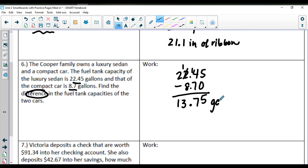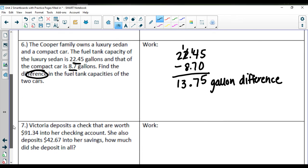So we have 13.75 gallon difference, and as long as you have gallons or gallon there, that would be good enough. The difference is just an extra word that you can add.